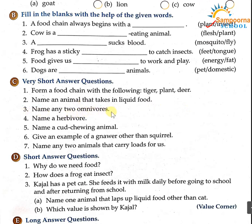Number 3: name any two omnivores — doh omnivores animals. Omnivores kaun se hoote hai? Jo plant aur flesh dono khaata hai. Aapka kuch bhi de sakta hai — bear, human beings, insaan, ya phir crow. Yeh sare omnivores hai. Number 4: name a herbivore — jo plant-eating animals hai, toh cow de sakta hai. Number 5: cud-chewing animal — cows hoote hai, toh aap cow bhi likh sakta hai ho. Number 6: give an example of a gnawing animal other than squirrel — nor ka example dena hai, rabbit ya cat.